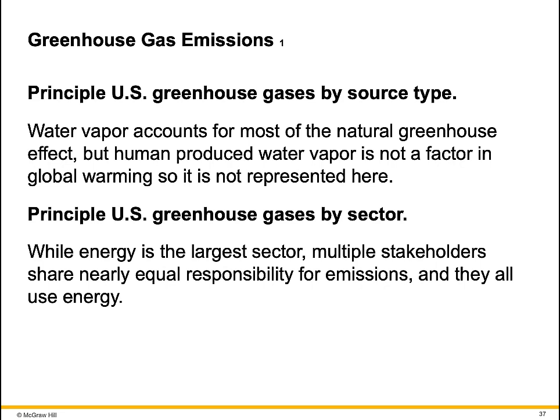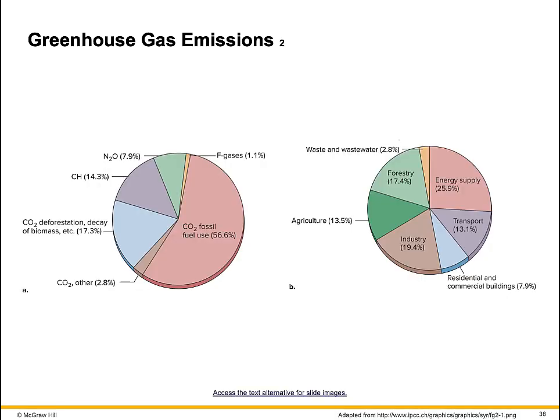The principal U.S. greenhouse gases by sector: while energy is the largest sector, multiple stakeholders share nearly equal responsibility for emissions and they all use energy. Global emissions of anthropogenic greenhouse gases are shown in pie charts. CH4 is methane, N2O is nitrous oxide, and F-gases are the fluorinated gases. The first pie graph shows the share of emissions by greenhouse gas, and the second pie graph shows the share of greenhouse gases by sector.